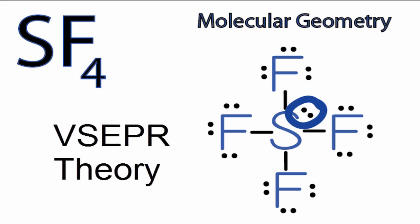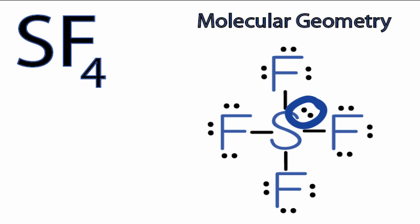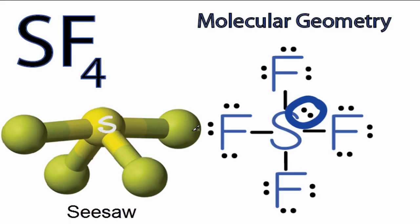According to valence-shell-electron-pair-repulsion theory, the atoms and the lone pairs of electrons are all going to push apart from each other, and that's going to give SF4 its molecular geometry. That's going to look like this. We have the sulfur in the center and then our fluorines on the outside around it.